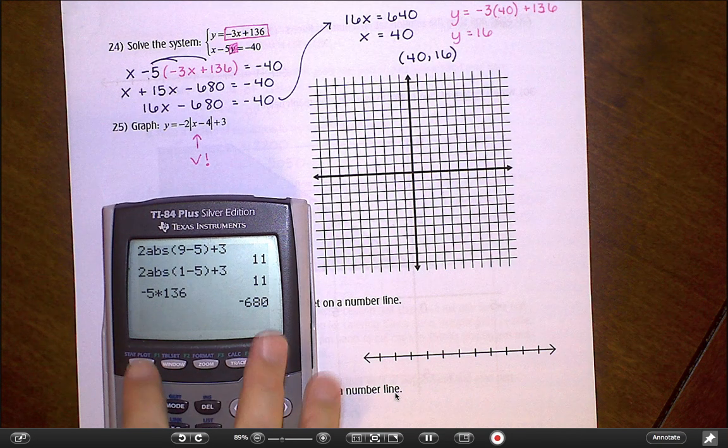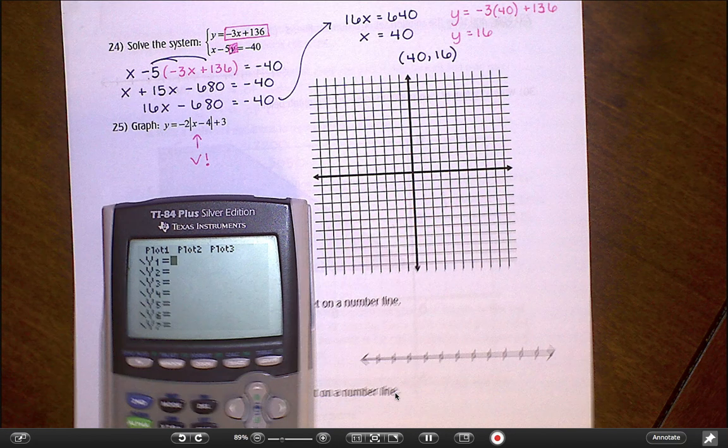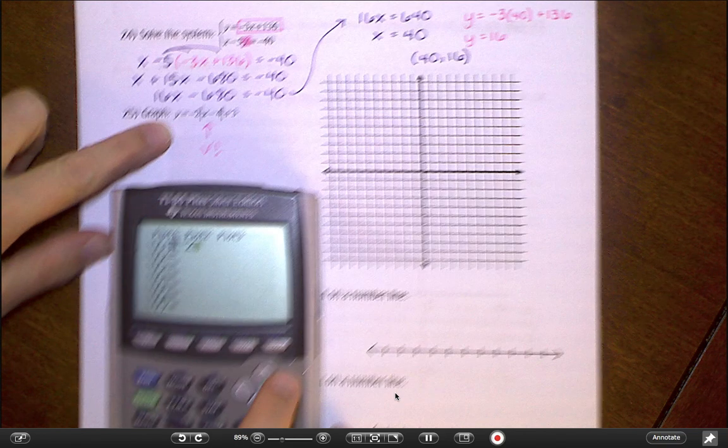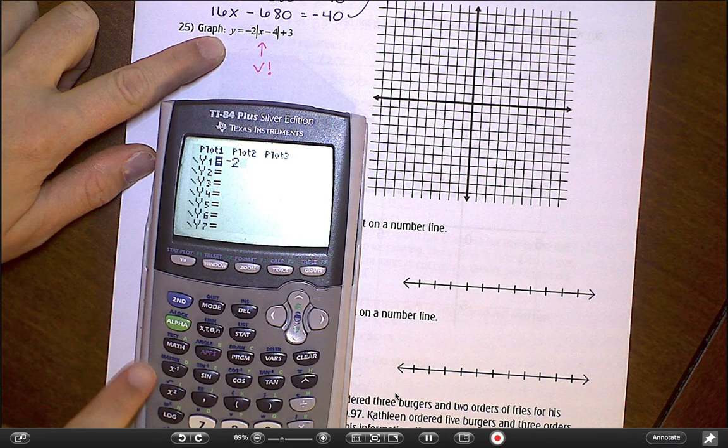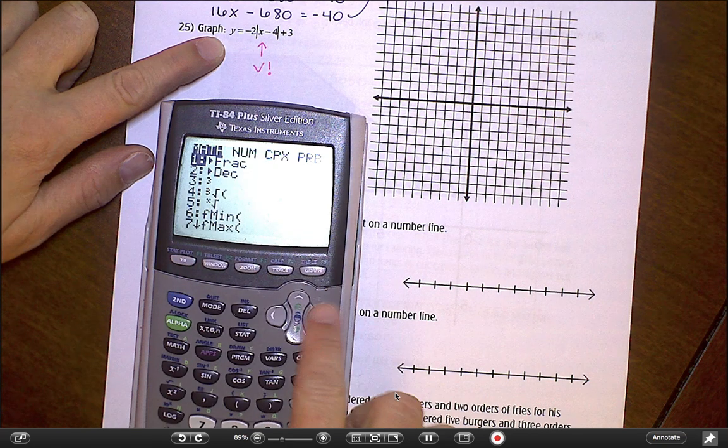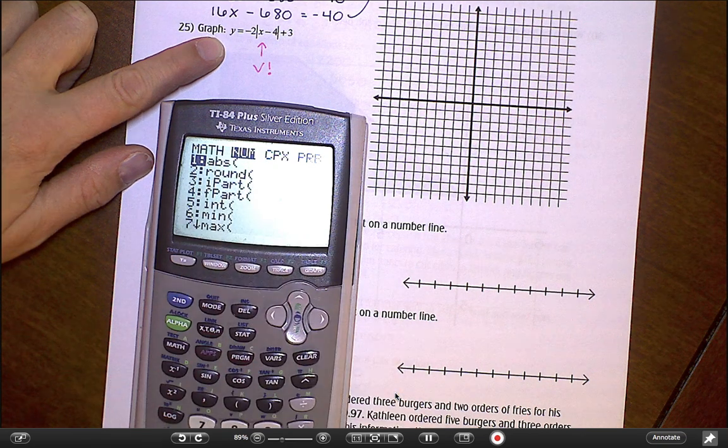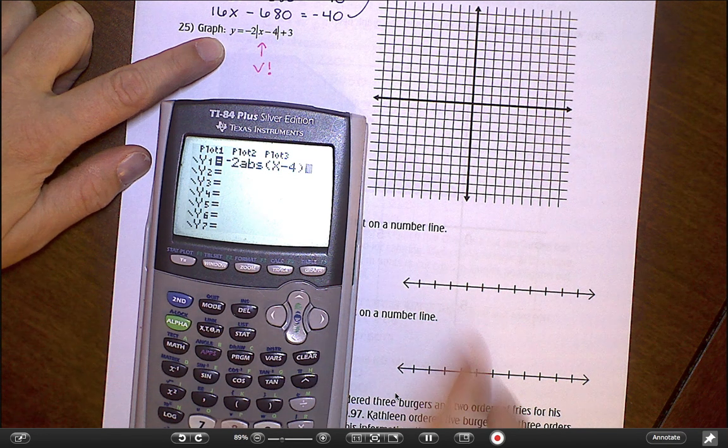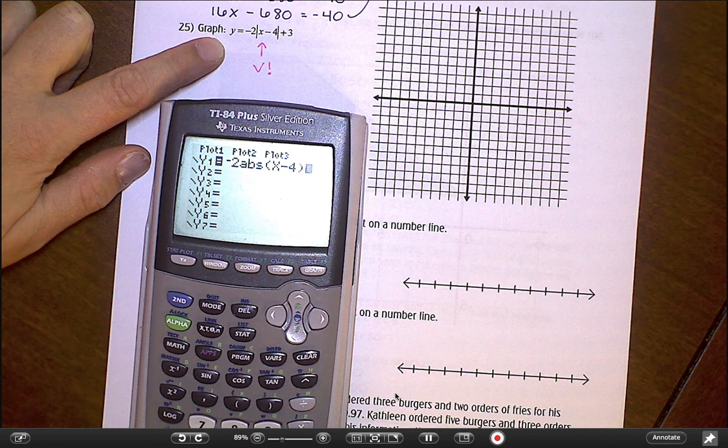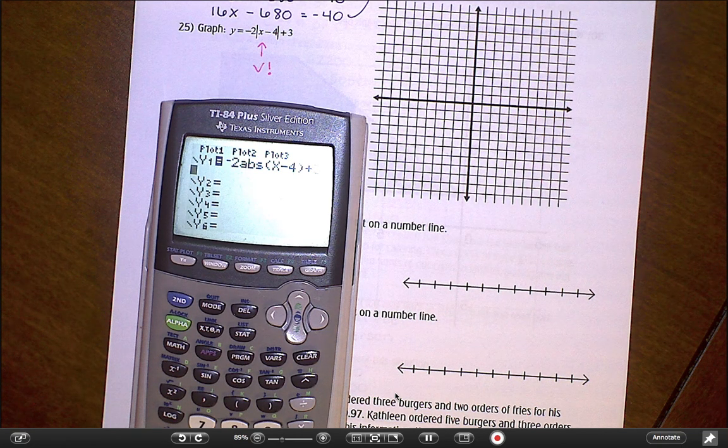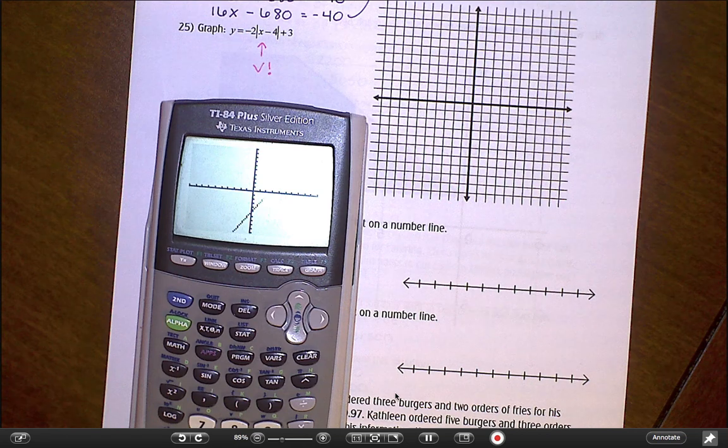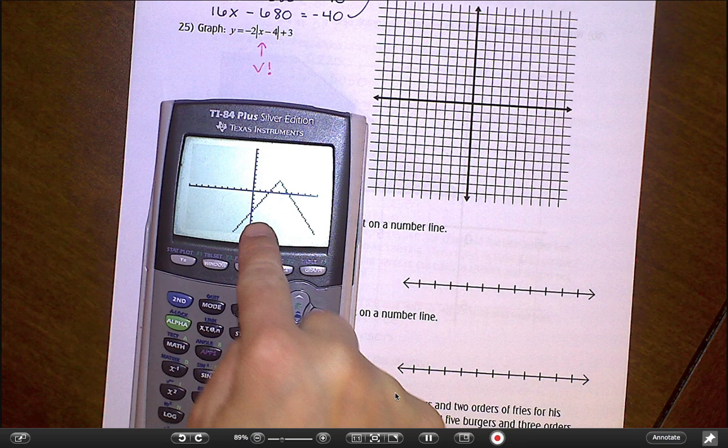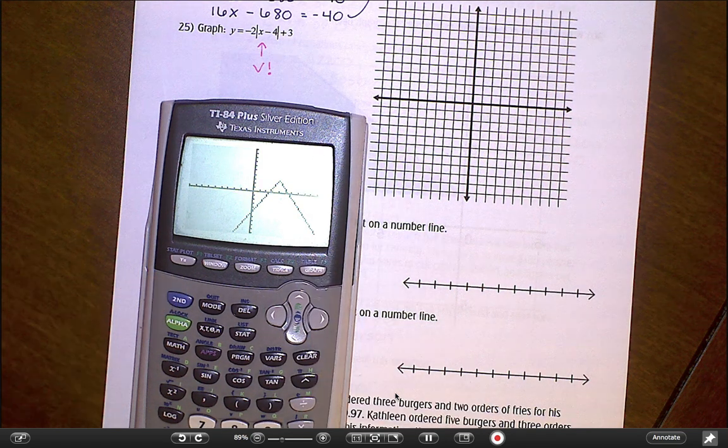We're going to talk through how to do this on the calculator. I'm going to go to my y equals, clear out anything that's in there, and I'm typing in negative 2. And then to get to absolute value, I'm hitting the math key, going over to number, and that very first option there is absolute value. x minus 4 inside of there. Close the parentheses, and then I'm putting a plus 3 out on the outside. I'm going to go ahead and hit graph.